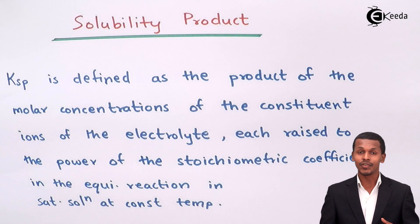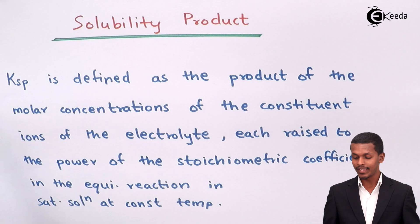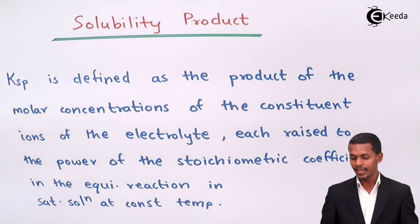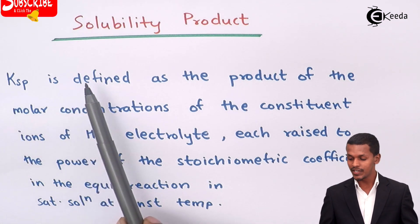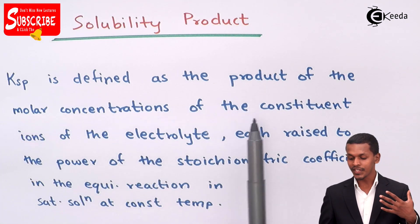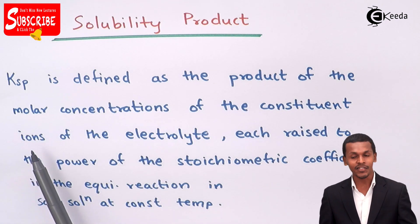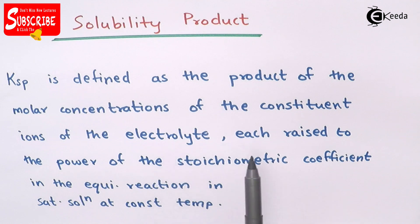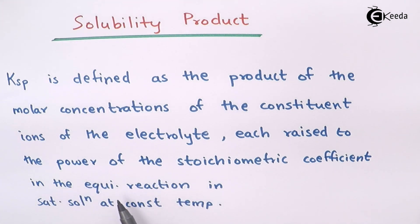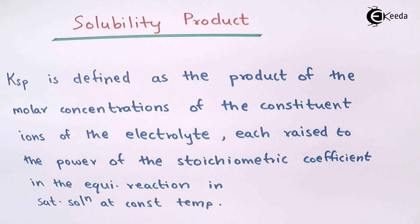The solubility product, denoted as KSP where SP stands for solubility product, has been defined as the product of the molar concentrations of the constituent ions of the electrolyte, each raised to the power of the stoichiometric coefficient in the equilibrium reaction in the saturated solution at constant temperature.